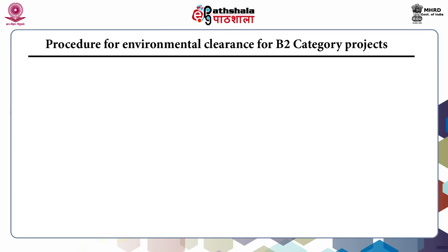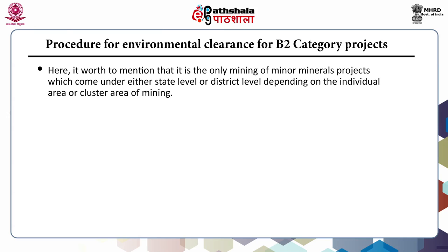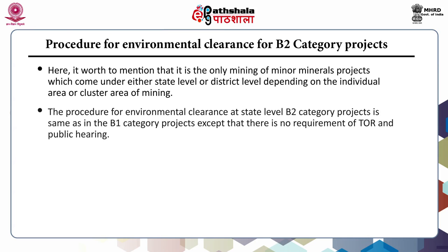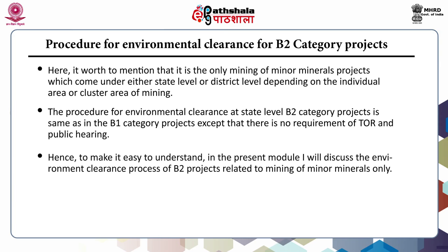Regarding the procedure for environmental clearance for Category B2 projects: it is worth mentioning that only mining of minor mineral projects come under either state level or district level depending on the individual area or cluster area of mining. The procedure for environmental clearance at state level for B2 category projects is the same as for B1 category projects, except that there is no requirement of terms of reference and public hearing. The present module will therefore focus on the environment clearance process of B2 projects related to mining of minor minerals only.